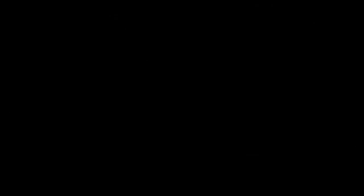Transcriptional activation in eukaryotes begins when transcription factors, RNA polymerase, and transcriptional activator proteins bind DNA and stimulate transcription. These proteins can bind at a number of sites, including enhancers and the core promoter, and the binding of all of these factors is essential for RNA polymerase to begin transcription.